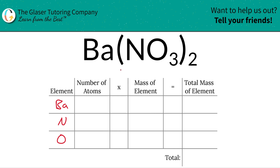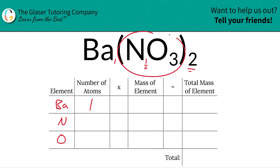The next thing is to write down the number of atoms — that's where the subscripts come into play. At the bottom of barium there is an invisible one, meaning there's one atom of barium in barium nitrate. For nitrogen, nitrogen is tied up in the nitrate polyatomic ion. Inside each single nitrate there's one nitrogen, but you don't have one nitrate, you have two of them. So if in every one nitrate there is one nitrogen but you have two nitrates, that means you have two nitrogens in total.